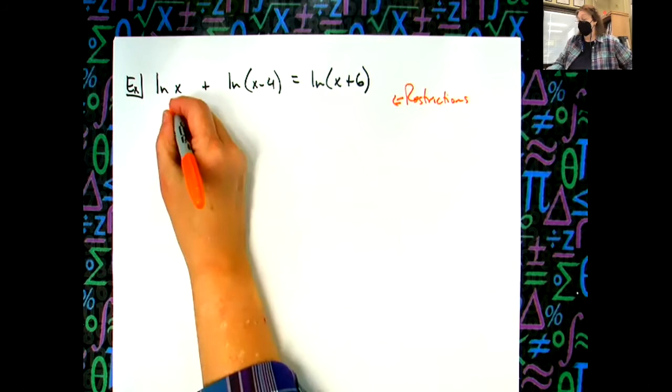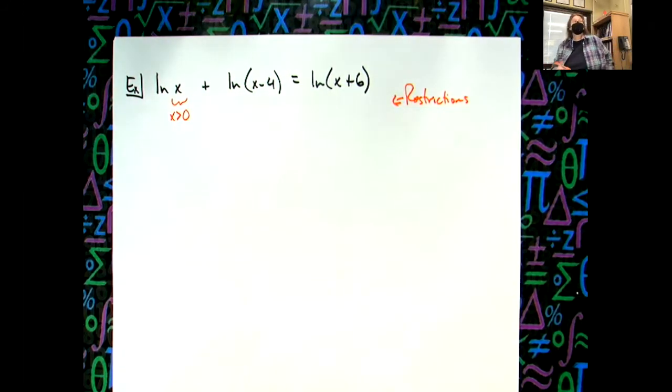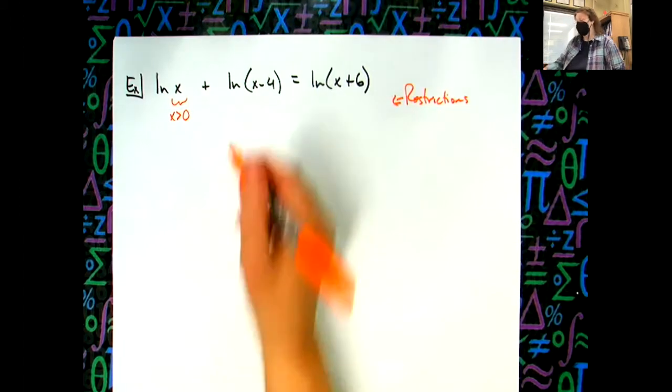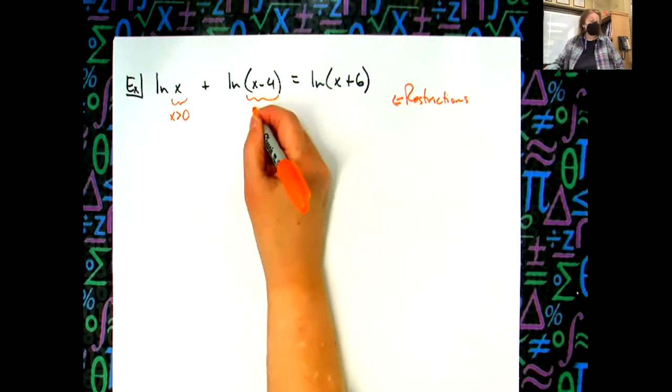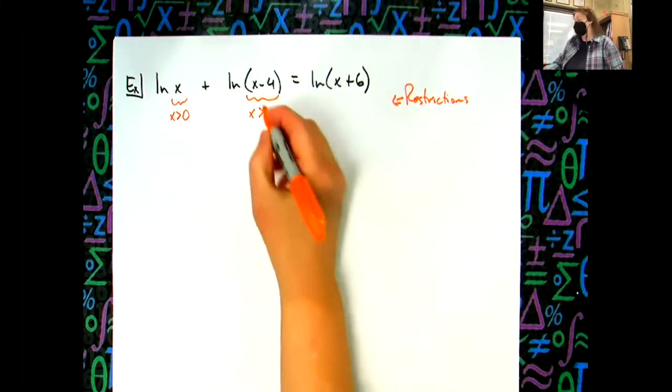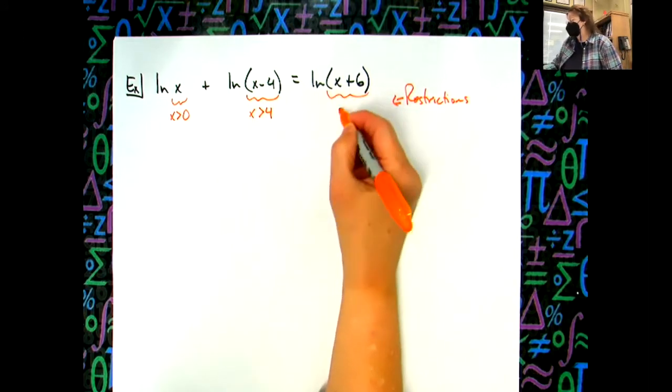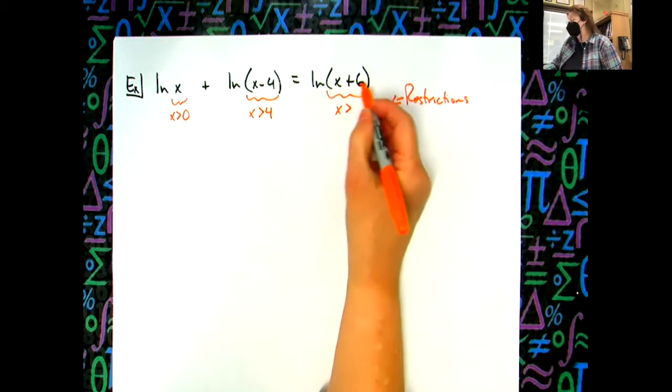So restriction here x has got to be greater than zero because we can't plug in a zero here. X has got to be greater than four. Four minus four gives me that zero, and here x has got to be greater than negative six.